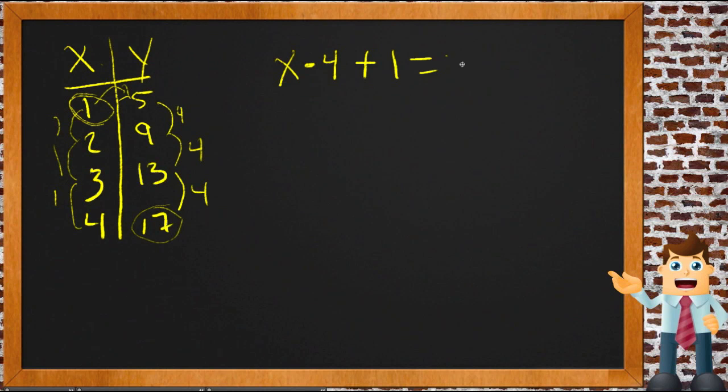Now we can try that and see. If we were to take 1, multiply it by 4, and then add 1, would we get 5? Yeah, that would work. What happens if we did it for the second one? 2 times 4 plus 1—take our number, multiply by 4, add 1. Is that 9? Yes it is, so that does work.